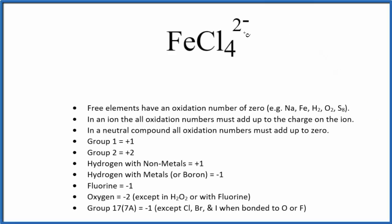Let's find the oxidation number for each element in FeCl4 2-. So the first thing we'll note, we have this 2- up here. This is an ion, and when we have an ion, all the oxidation numbers are going to add up to the charge on the ion. So that's important to know.